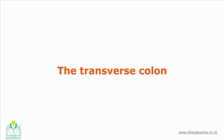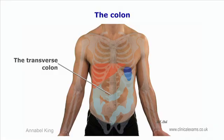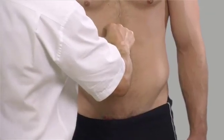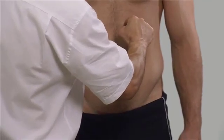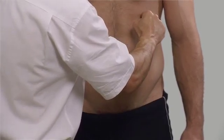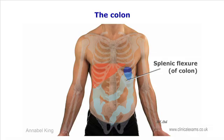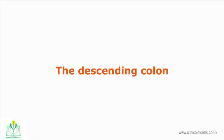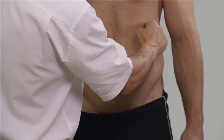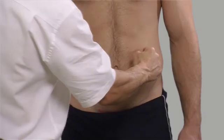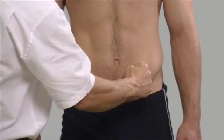The transverse colon starts from the hepatic flexure at the transpyloric plane, or at the tenth costal cartilage, and extends to the left costal margin at the eighth costal cartilage. Near the spleen, it folds downwards — this is referred to as the splenic flexure.